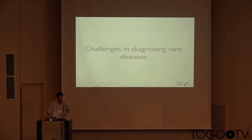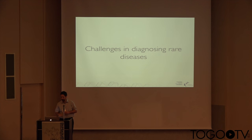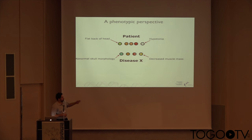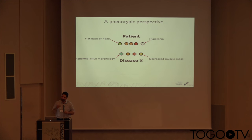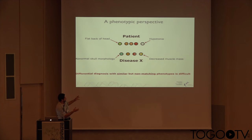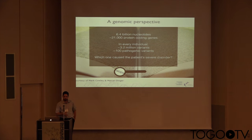One way of looking at the challenges with respect to diagnosing rare diseases is from a phenotypic perspective. You may have a patient with a phenotypic profile that includes perhaps flat back of head and hypotonia, but the level of specificity and degree of the phenotype profile does not exactly match with the patient. There may be terms that are slightly broader or slightly narrower — the disease may be characterized by abnormal skull morphology or decreased muscle mass — so differential diagnosis with similar but not exactly matching terms is quite difficult.